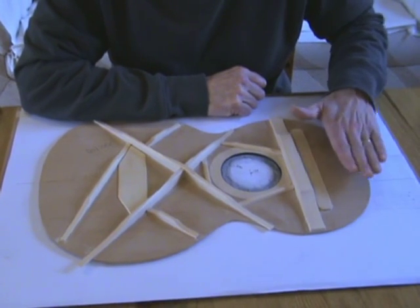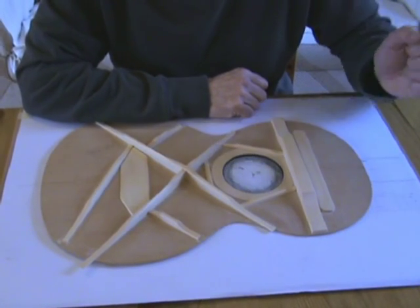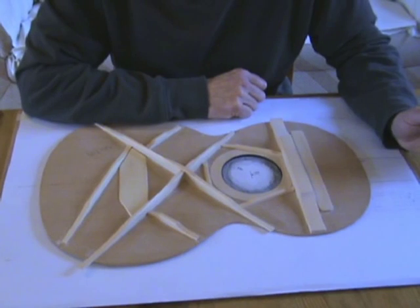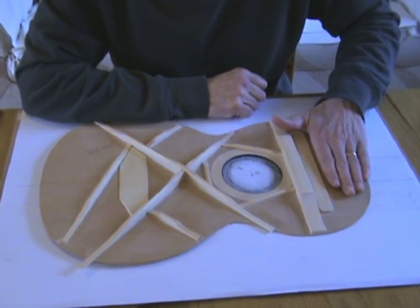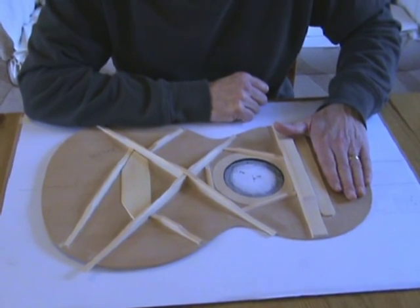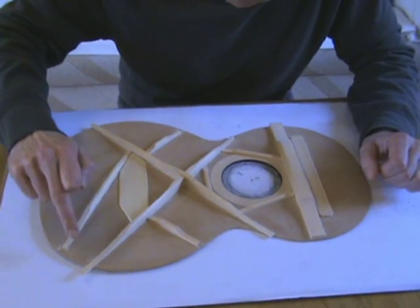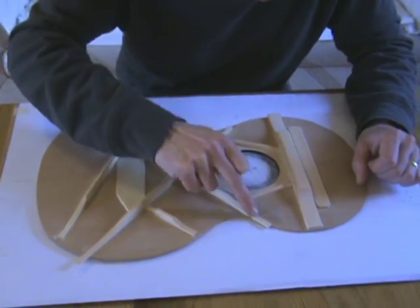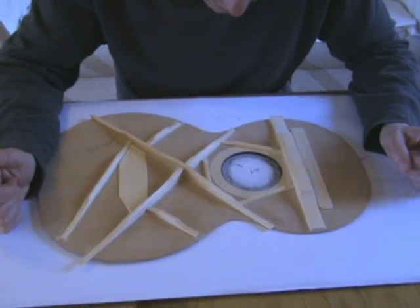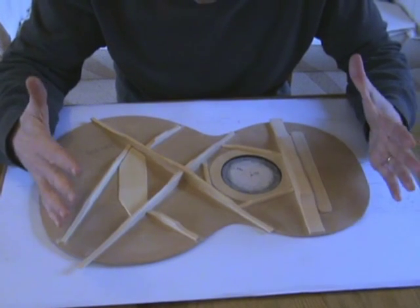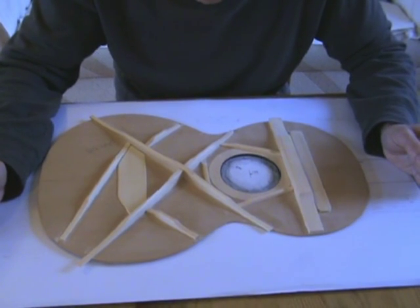And of course the end block, the one I spoke about in the rim video, that takes up the remainder of that space. Each one of these braces will go into little notches in the linings, so the whole thing is really quite rigid.